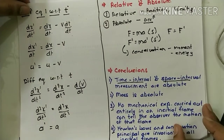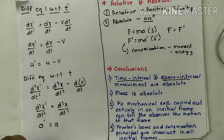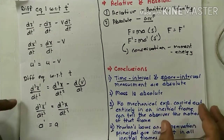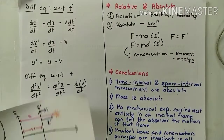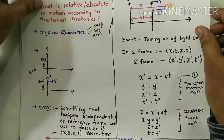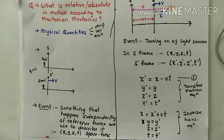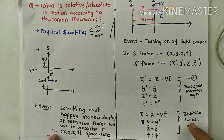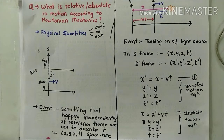In this lecture we tried to understand what is Galilean transformation and what is relative and what is absolute according to Newton's mechanics. According to Newton's mechanics, time, mass, and length are absolute — they do not depend on the frame of reference — whereas velocity and position are relative. We also saw the transformation equations which allow us to find coordinates and time in all inertial frames of reference, known as Galilean transformation equations, along with their inverse. In the next class we will see what is the problem with these transformation equations.